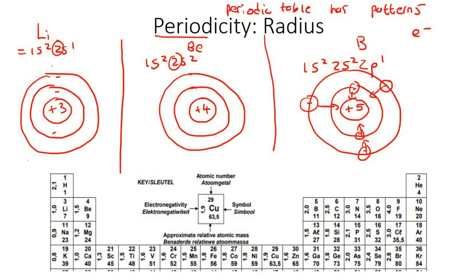A more positive nuclear charge will exert a larger attractive force on the surrounding electrons. This causes the electrons to be pulled towards the nucleus, which causes the atomic radius to decrease.